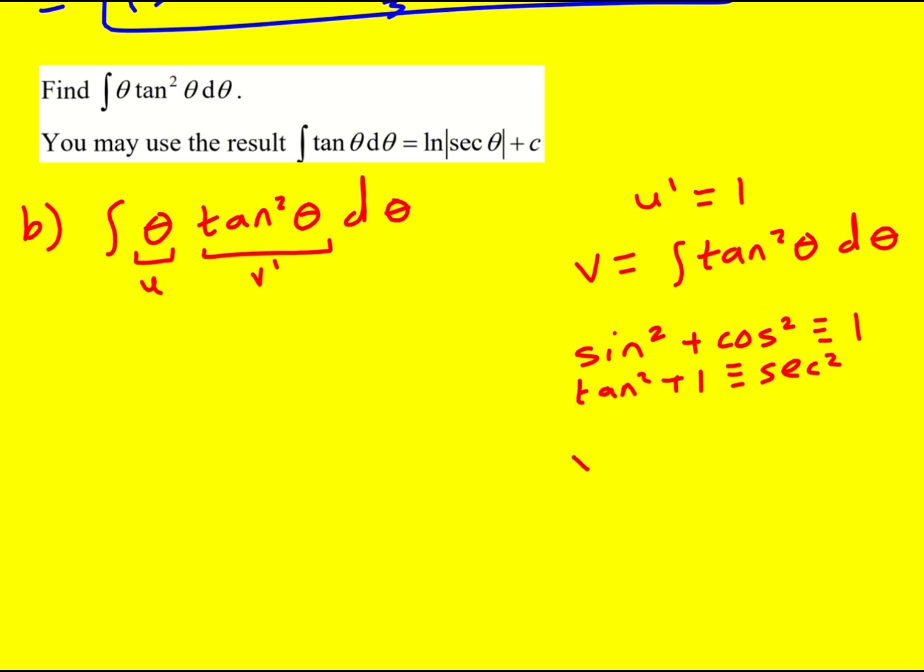So that means that v is actually going to become the integral of sec squared theta minus 1. You might have been able to go straight there, fair play if you can. And the reason we do this is that actually the integral of sec squared theta is just tan theta. That one is in the formula book, or at least the derivative is. When you do the derivative of tan theta you get sec squared, so it works in reverse as well. It's also worth knowing to be honest, but it is given.